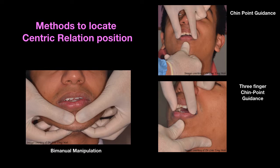There are three methods to manipulate the jaw in locating the centric relation position: by manual manipulation, chin point guidance, and three-finger chin point guidance. Manual manipulation positions the condyle in the most posterior and superior position, allowing the muscles to guide the condyles into a physiologic, anteriorly and superiorly braced position on the articular disc along the articular eminence.